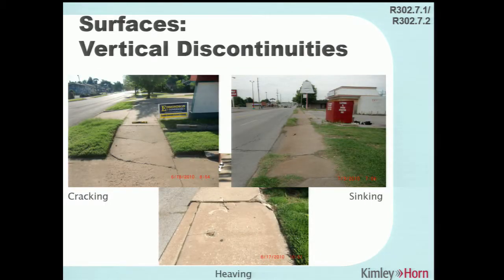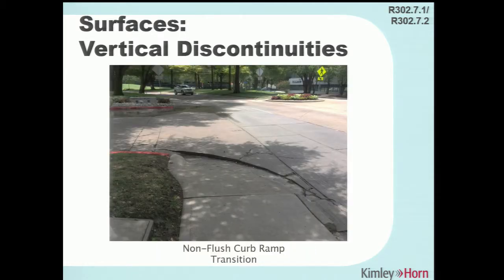Vertical discontinuities can be caused by tree roots, ground sinking, or other settling. From a design perspective, think about what landscaping you're placing adjacent to sidewalks — consider tree root barriers or avoiding large trees and shrubbery within a certain distance of the sidewalk. One example shows what was probably a compliant installation that over time developed a four-inch gap between the base of the curb ramp and the pedestrian street crossing. When addressing these issues, think about fixing the underlying condition rather than just replacing the curb ramp.